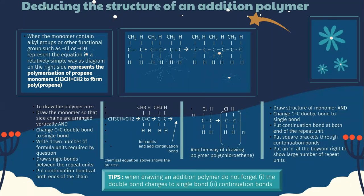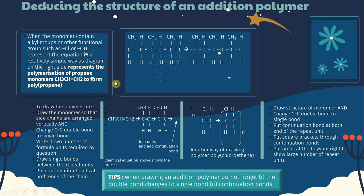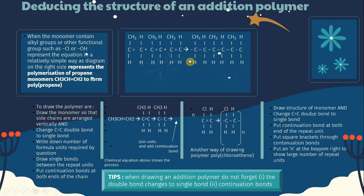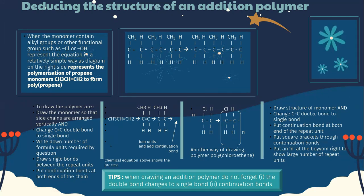Let's look into drawing the structure of an addition polymer. When the monomer contains functional groups such as Cl or OH, we can represent the equation in a relatively simple way as shown in the diagram. The diagram represents the polymerization of propene monomer CH3-CH=CH2 to form polypropene.